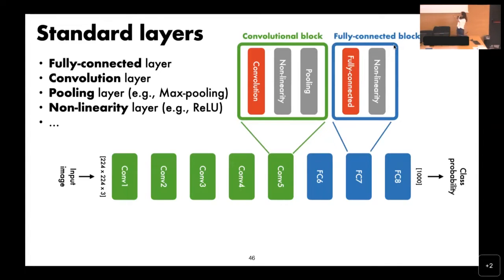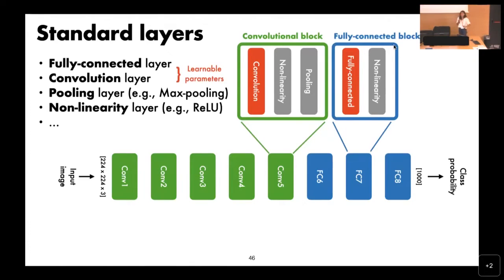Whatever is shown in red has learnable parameters — meaning when you minimize the loss function, they are parameterized by weights. For a linear layer, W and B are the learnable weights, randomly initialized and updated over training to find optimal parameters. For pooling and nonlinearity, depending on how you define them, they may or may not have parameters.